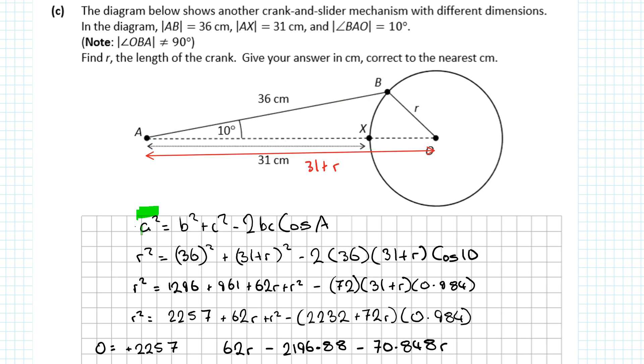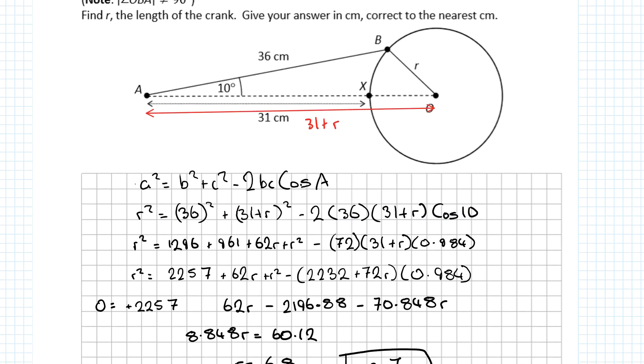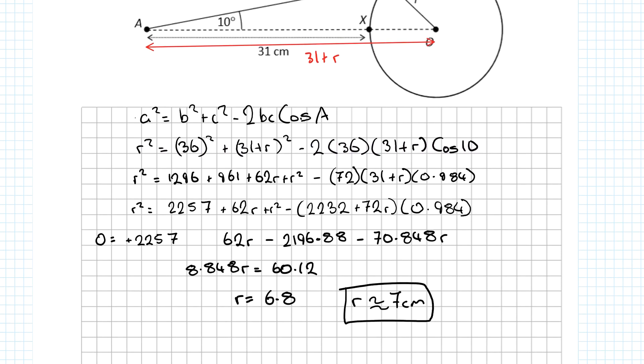With the cosine rule, the side that's on its own should be opposite the angle you know. The only angle I know is 10°. So R goes here, B is 36, and this side is 31 + R. So R² = 36² + (31 + R)² - 2(36)(31 + R)cos 10°. Take a second - how many unknowns? Only one unknown and one equation. You should be able to solve that.